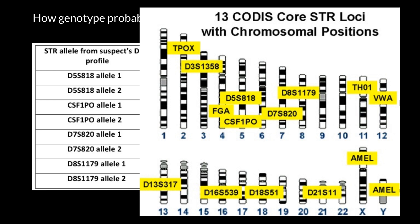Every person may have at these loci a different number of short tandem repeats. Because we are diploid, there is only one chromosome shown here — this is only the haploid number of chromosomes. But actually, we have two chromosomes number one, two chromosomes number two, two chromosomes number three, and so on. One chromosome we got from one parent, and another chromosome in each pair we got from the second parent — from mother and from father. So at each locus, we might get either two alleles that are an exact match, or which have the same length of the molecule.